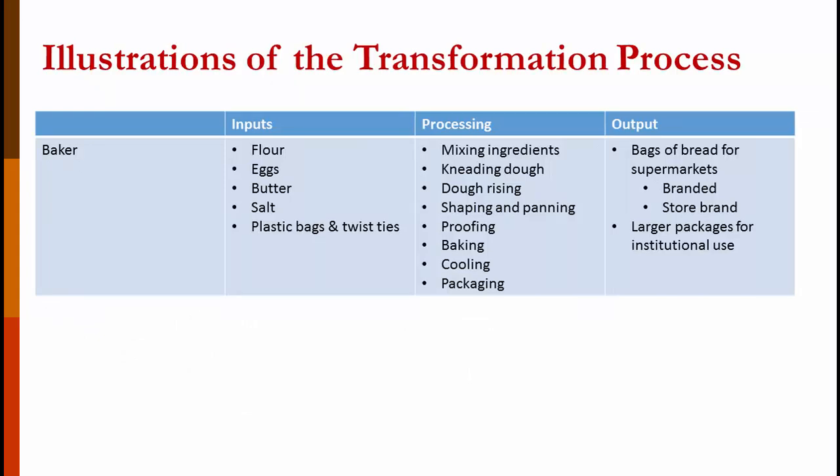The process of operations is a transformation process, taking inputs and turning them into outputs where those outputs hopefully have greater value. Two different transformation processes are shown on the screen as examples. We've talked about the baker already: they take the raw ingredients — flour, eggs, butter, and other ingredients — and transform them into bread. Their inputs are raw ingredients and their outputs are bags of bread.